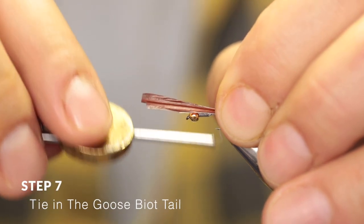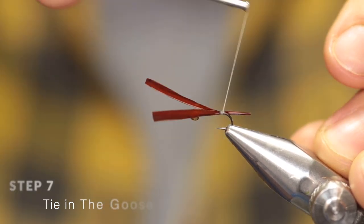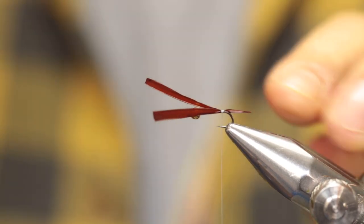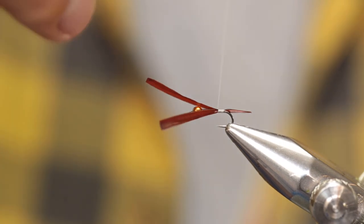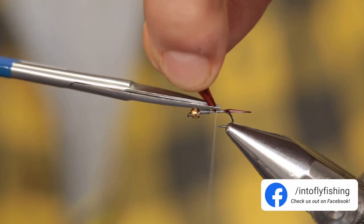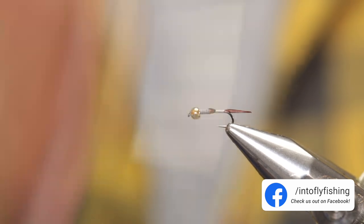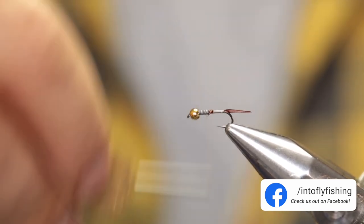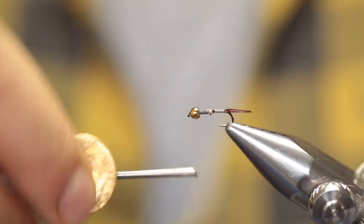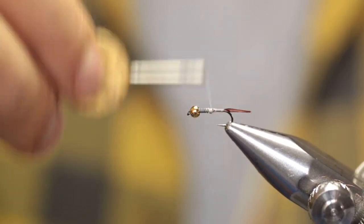With two pinch wraps, secure it. Check that the tail will flare out nicely—that's perfect. Make a couple of wraps forward and cut off the excess so the goose fibers extend up to the beginning of the thorax. Build a little bit of a taper right there and run it back.